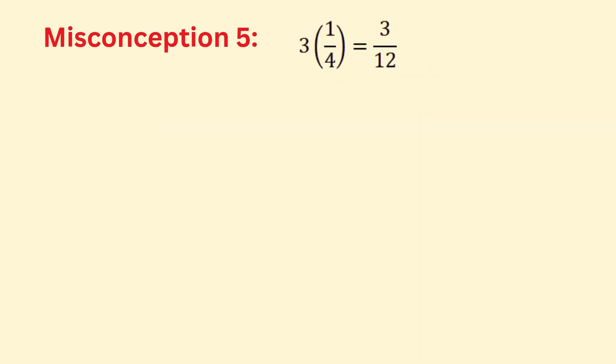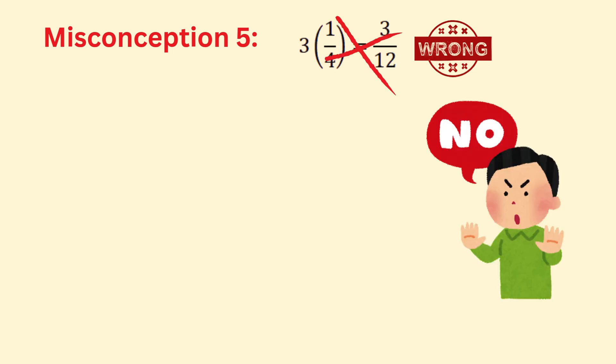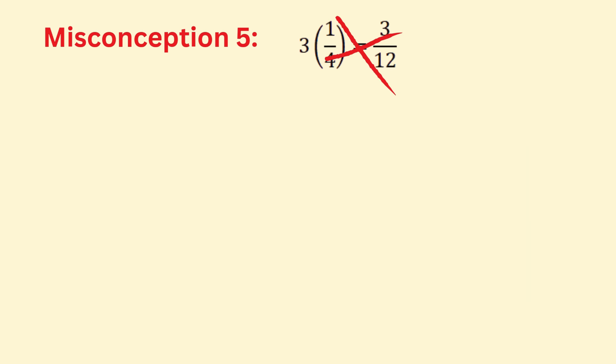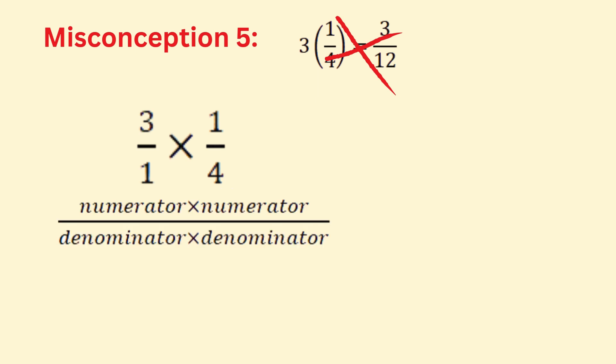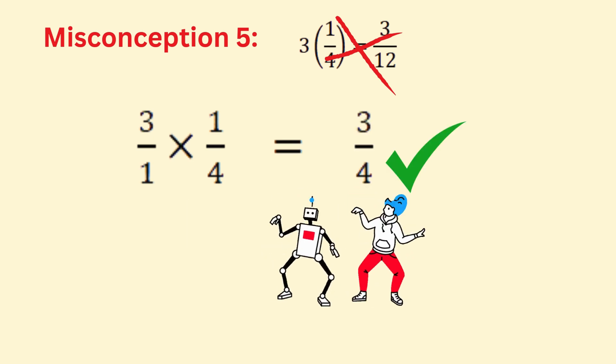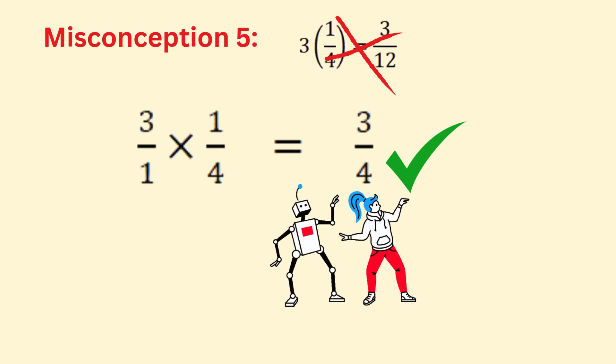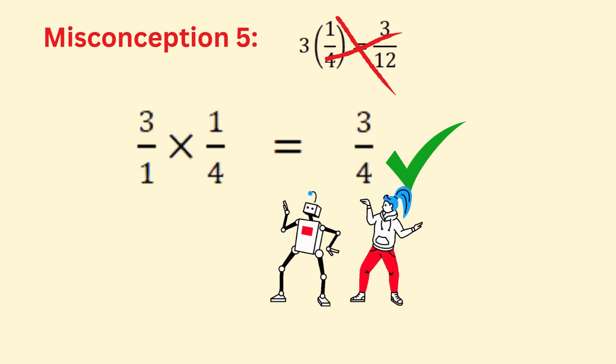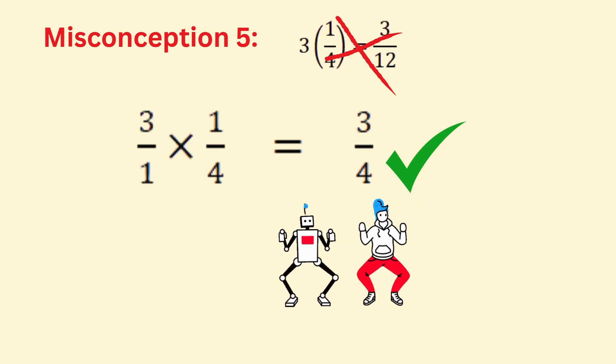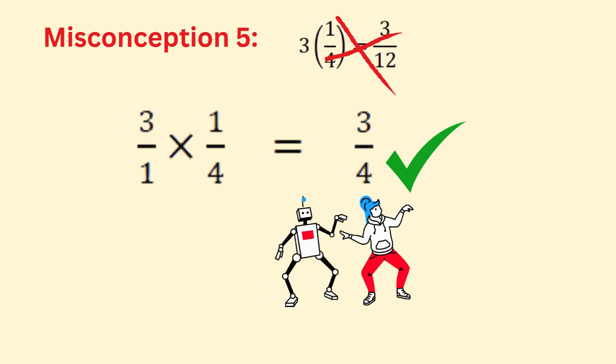This happens when students forget that one quarter is a single term, not two terms to be multiplied separately. To fix this, put the whole number over 1 and recall that it's numerator times numerator over denominator times denominator when multiplying fractions. This gives us 3×1 / 1×4 = 3/4. Key tip: always put the whole number over 1 and treat the fraction as a single unit, following the rules for multiplying fractions.